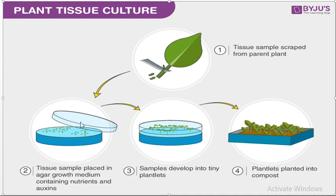How does it grow? By the addition of nutrients and growth hormones, like cytokinin and indole acetic acid (IAA). These nutrients and hormones allow the small plants to grow.